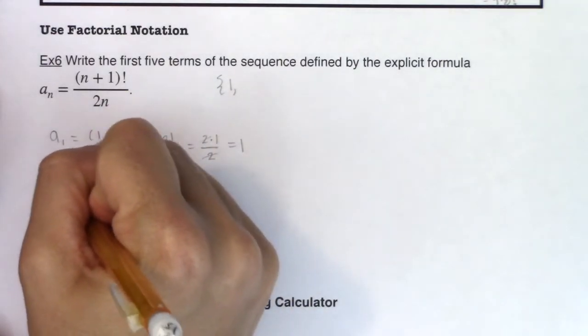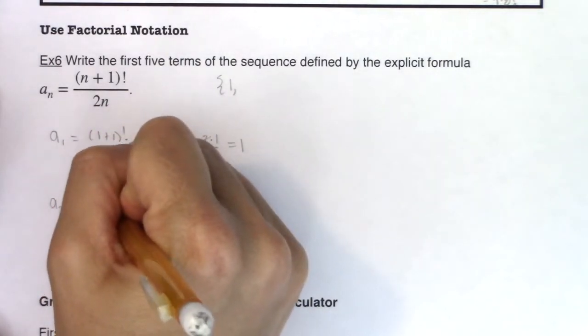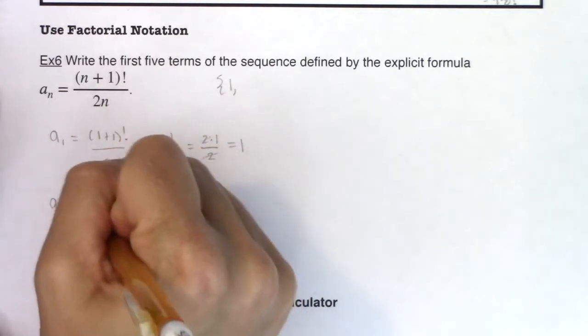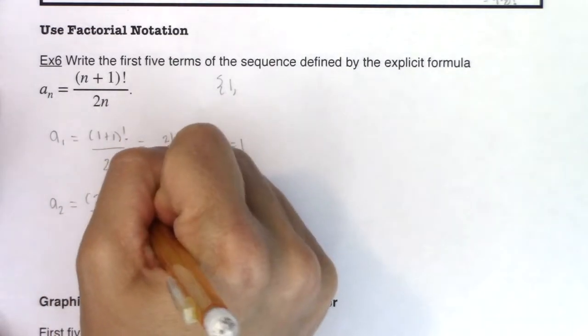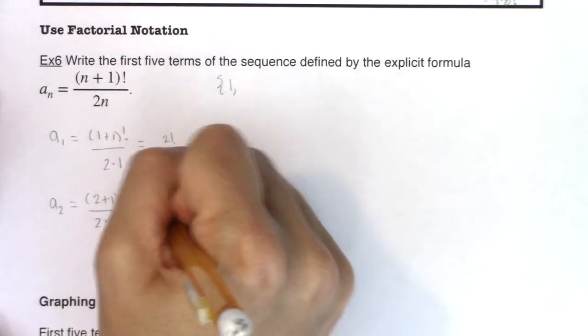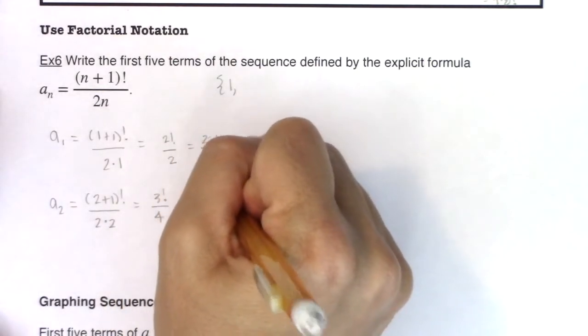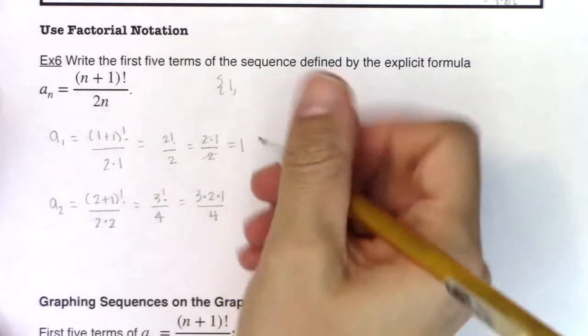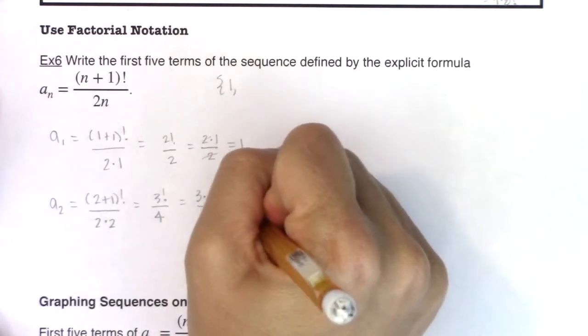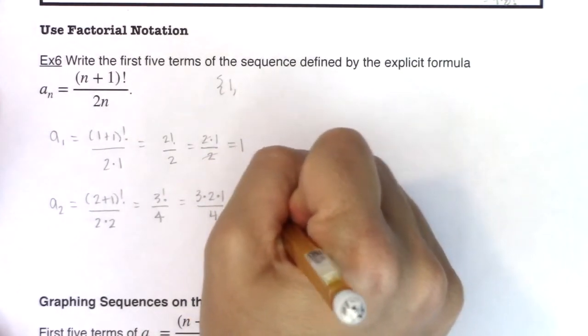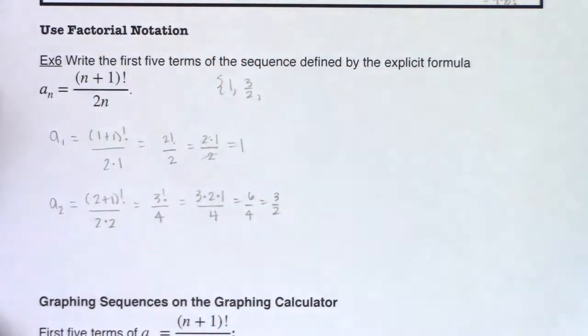Let's see what a sub 2 will give me. a sub 2 is (2+1)! over 2 times 2. That is 3! over 4. Well, 3! is 3 times 2 times 1 over 4. That's 6 fourths. So that's going to get me to 3 halves.